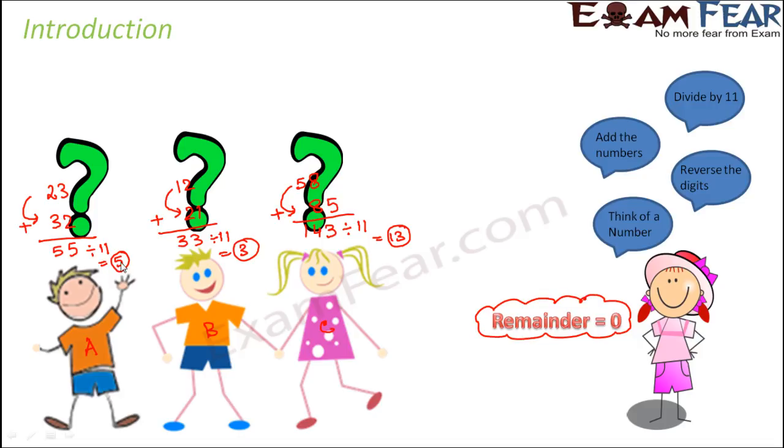If you see 55 divided by 11, 5 is the quotient. Why 5 is the quotient? Because 55 is completely divisible by 11. So the remainder is 0. Here also, 33 is totally divisible by 11, so the remainder is 0. Here also, 143 is completely divisible by 11 and the remainder is 0. That's surprising.